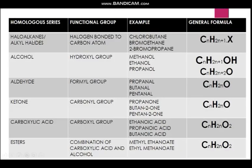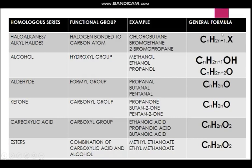Next we have haloalkanes, also known as alkyl halides. They are characterized by a halogen bonded to carbon atoms. Halogens are your group 17 elements from the periodic table, including chlorine, bromine, and fluorine. For haloalkanes, we mostly use chlorine and bromine, represented as chloro- and bromo-. Examples include chlorobutane, bromoethane, and 2-bromopropane. The general formula is CnH2n+1X, where X represents the halogen, which can be either chlorine or bromine.